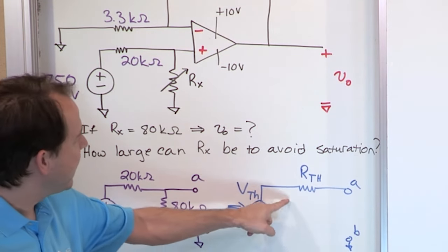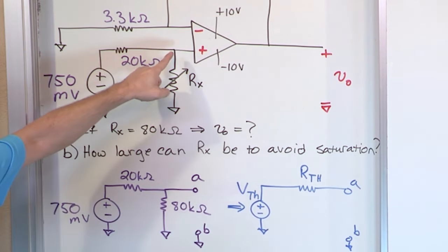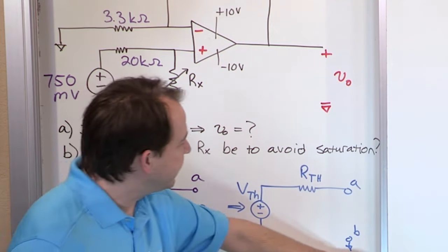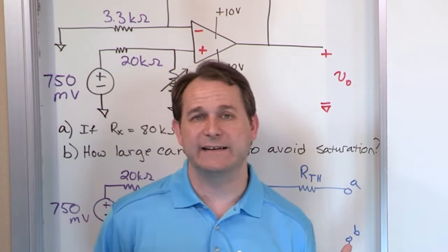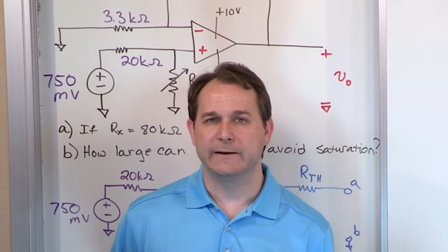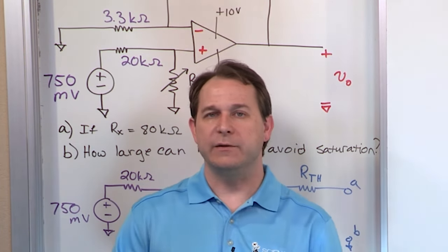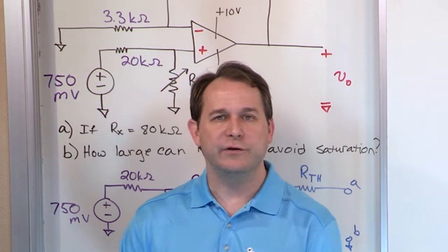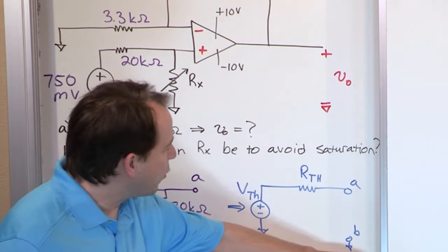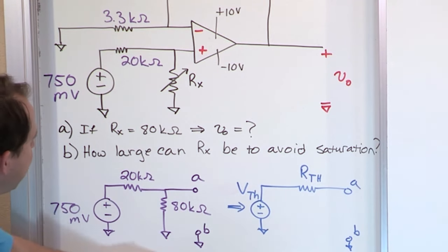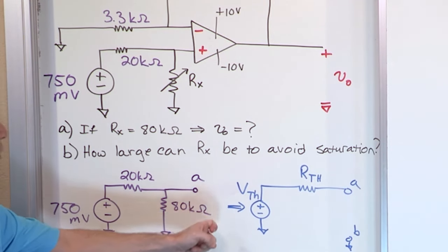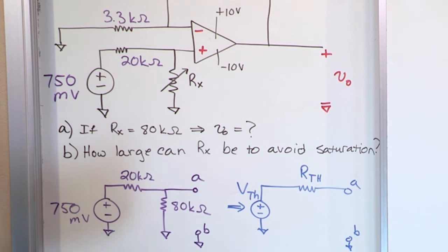If you take this Thevenin equivalent and connect it back to the amplifier, you would have a single resistor and a single source to ground. This looks exactly like what we showed in the last lesson. So you model this as a Thevenin equivalent and then use all the equations and techniques from the last section. This network with this source looks and behaves exactly like the Thevenin equivalent from terminals A and B — meaning from the amplifier's perspective.